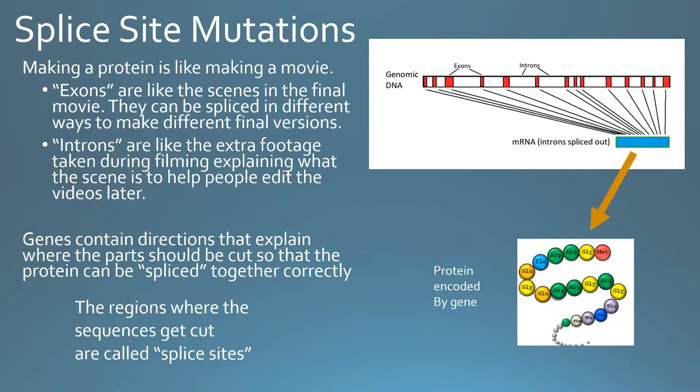Now, splice sites. The DNA for a gene in a person's genome isn't just the regions which code for the protein sequence. Only a small part of each gene is actually the coding regions, which are called exons. Most of the gene is composed of regions between the exons called introns, which have other functions. When the protein is actually made, the DNA is copied to RNA and then the introns are spliced out.